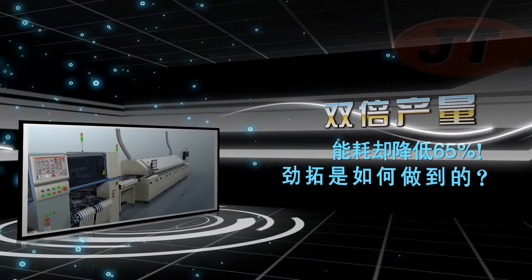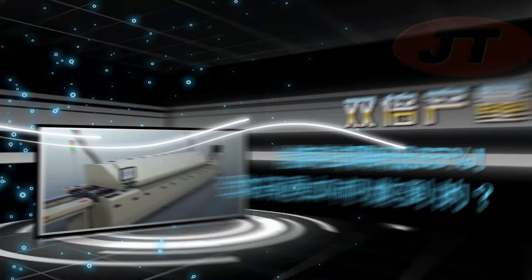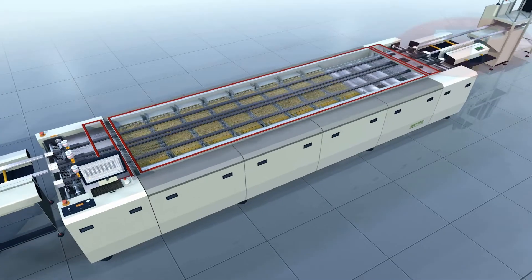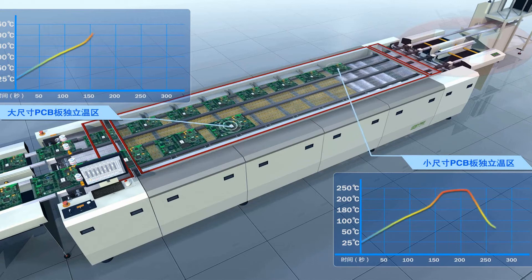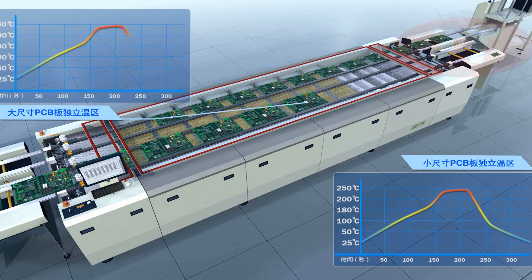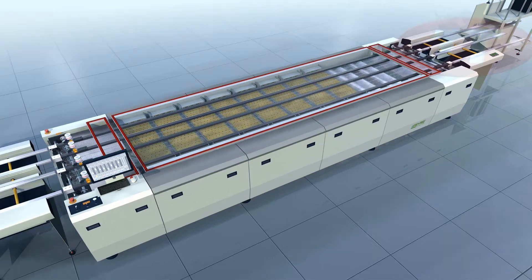For higher efficient energy savings, while increasing output with the same footprint area of a single oven, a dual-lane oven can be implemented in line with two independent placement machines, offering the flexibility expected from Juki.